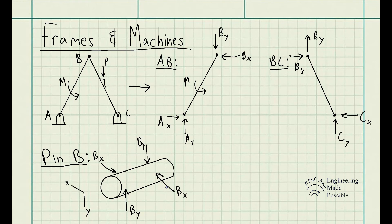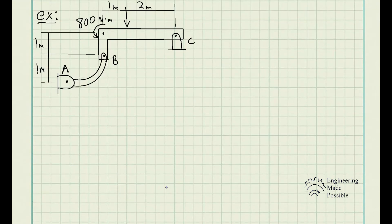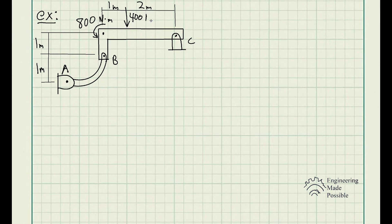Let's now do an example problem. For this problem, we have to determine the horizontal and vertical components of reaction at pin C. We have pin C, pin A, a member AB connecting to member BC, an external moment being applied, and an external force of 400 newtons. We need to find the reaction components at C.